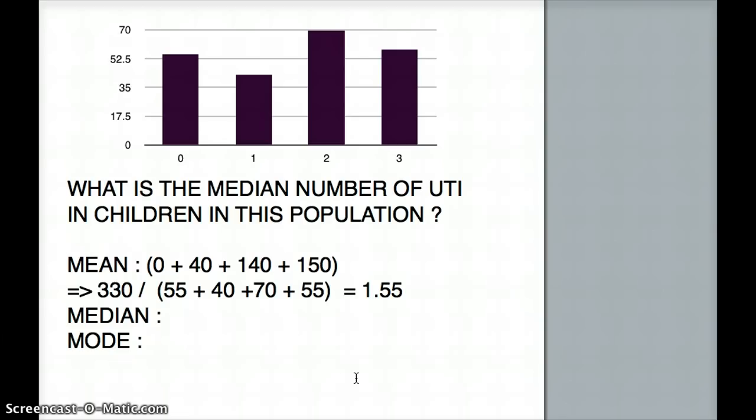Let's orient ourselves with the graph here. On the x-axis we have the number of UTI infections in this population of children in about a year, and on the y-axis is the number of children. What I'm going to do is first take down the numbers and arrange them in ascending order. In these kinds of questions I always put it in ascending order and I'll tell you why.